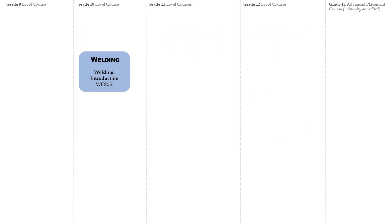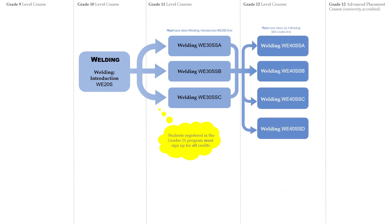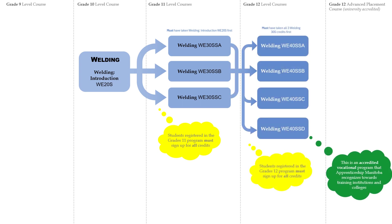Welding is an optional course that can be taken starting in Grade 9 or 10. A cluster of Grade 11 courses must be taken in this program. Grade 12 level courses are also mandatory in this program based on the previous cluster or prerequisites. This is an accredited vocational program that Apprenticeship Manitoba recognizes towards training institutions and colleges.